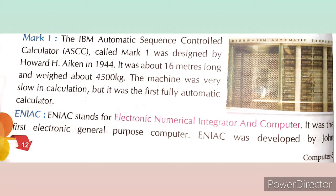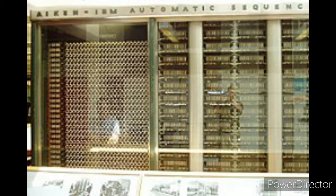Some examples of first generation computers: Mark 1 — the IBM Automatic Sequence Controlled Calculator, in short form ASCC, called Mark 1, was designed by Howard H. Aiken in 1944. It was about 16 meters long and weighed about 4,500 kg. The machine was very slow in calculation but it was the first fully automatic calculator and the first operating machine that could execute long computations.